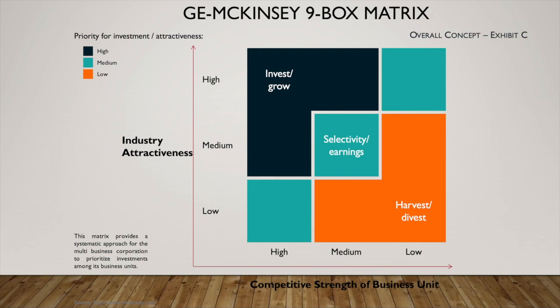Overall, the GE McKinsey Matrix is a 9-cell portfolio matrix, originally developed for GE as a means of screening their large portfolio of strategic business units. The main drivers for its product portfolio are competitive strength and market attractiveness. Ultimately, the position of a product on the matrix decides whether the business should continue to focus on growth, or on minimizing investment and selling.